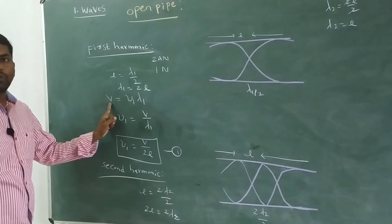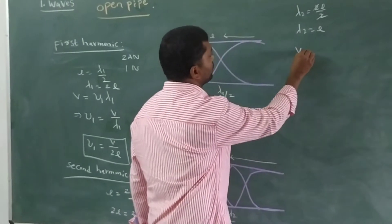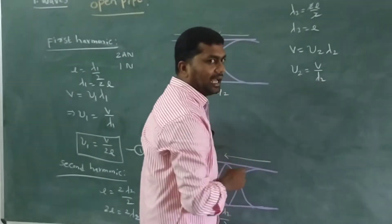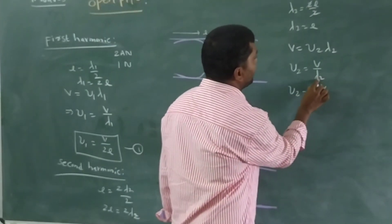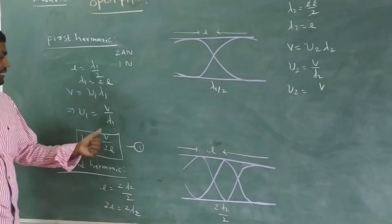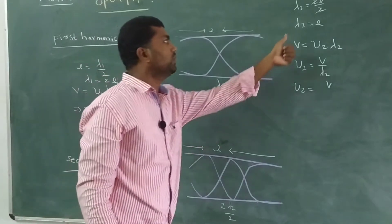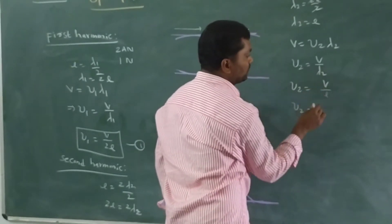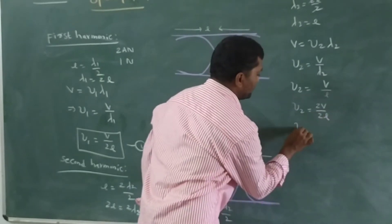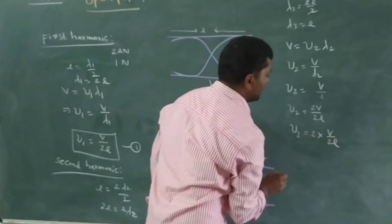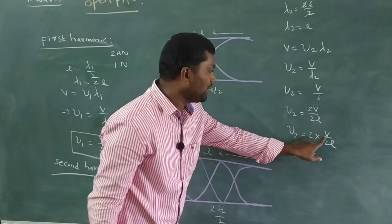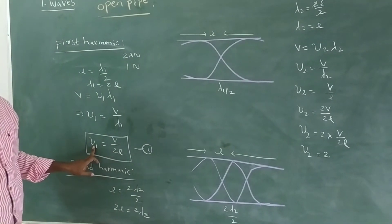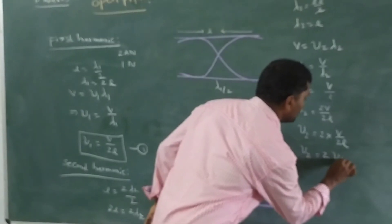Using the wave velocity equation for the 2nd harmonic, V is equal to ν₂λ₂. We calculate the frequency: ν₂ is equal to V by λ₂. Since λ₂ equals L, ν₂ is equal to V by L. Multiplying and dividing by 2, this becomes ν₂ equal to 2V by 2L, which means ν₂ is equal to 2 into V by 2L. Since V by 2L is the fundamental frequency ν₁, we substitute to get ν₂ equal to 2ν₁.